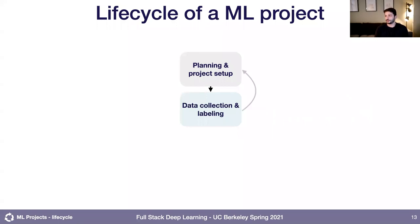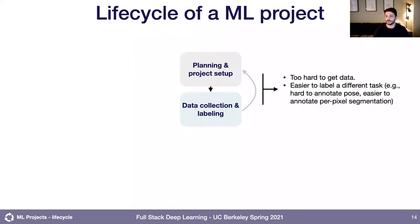One thing to know about the life cycle of machine learning projects is that it's not a linear flow from project planning to deployment — it's actually a loop. At each stage, there are opportunities to loop back to earlier stages as you learn more. For example, you might loop back from data collection to planning because you find it's really too hard to get data for the task you're working on, so you refine the task or pose it differently to make data collection and labeling easier.